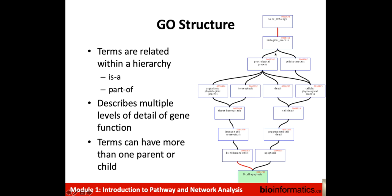Gene Ontology is structured in a hierarchy. The terms are boxes, and the relationships between terms vary — two examples are ISA and Part Of relationships. For instance, B-cell apoptosis is a type of apoptosis, which is a type of programmed cell death, which is a type of cell death, which is a type of physiological process, all the way up to a very general part of the hierarchy. B-cell apoptosis is also part of B-cell homeostasis, which is a type of immune cell homeostasis. The advantage of organizing terms in this hierarchy is that it describes multiple levels of detail about gene function. Terms can have more than one parent or child.